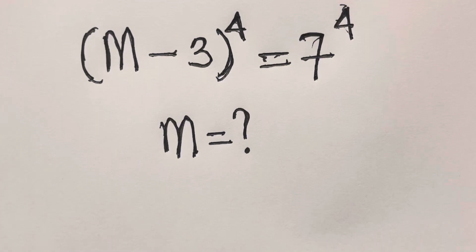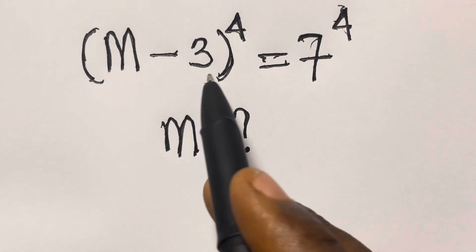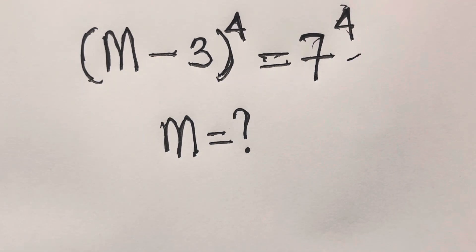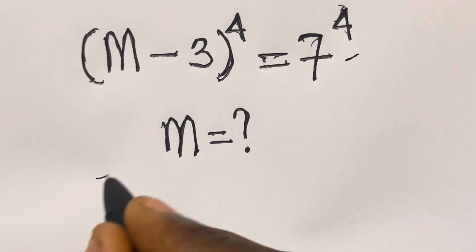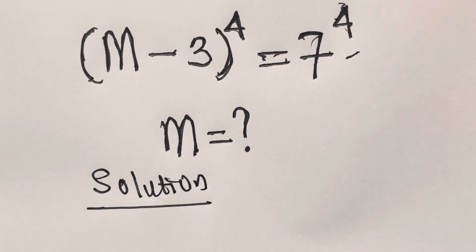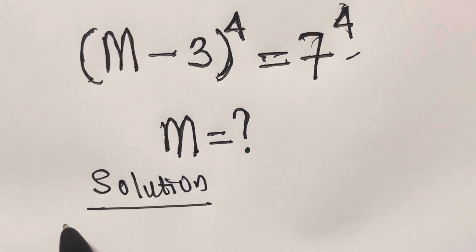Hi, welcome to mathematics. In this video we want to solve for m in (m minus 3) raised to power 4 equals 7 raised to power 4. Although this question looks simple and you can easily say the answer is 10, trust me the solution is more than 10, so let's see.